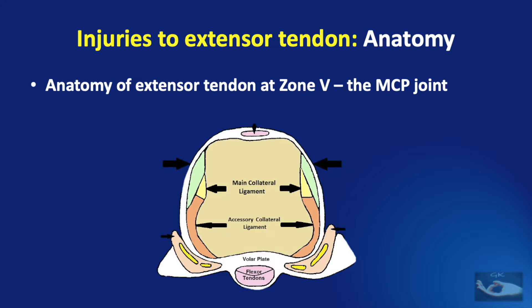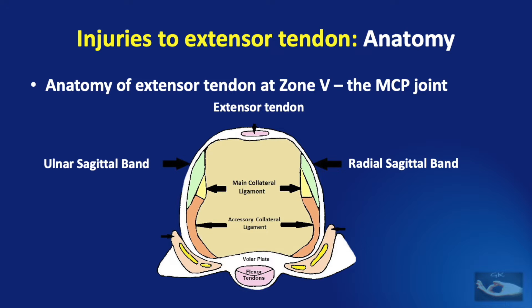The anatomy of the extensor tendon at the level of the metacarpophalangeal joint is quite simple. We have the extensor tendon on the dorsal aspect of the joint, the radial sagittal band on the radial side, the ulnar sagittal band on the ulnar side. The radial sagittal band is usually the thicker structure. We have the interossei and the lumbricals on the radial side and the interossei on the ulnar side.